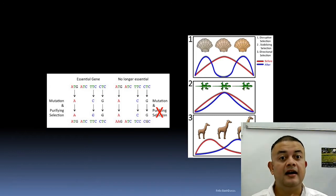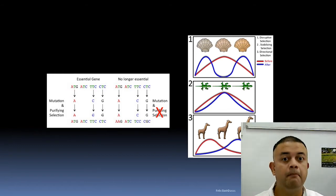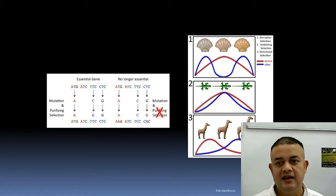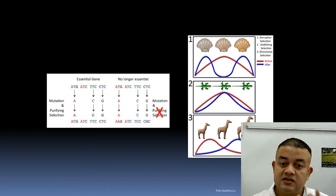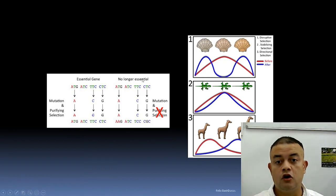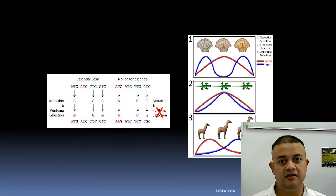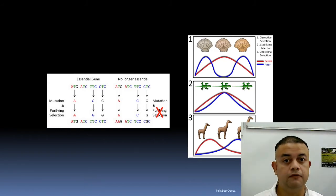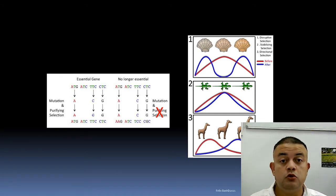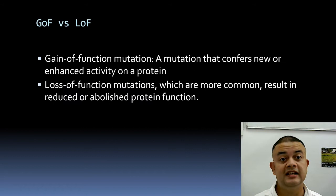If genes are essential, non-synonymous substitutions cannot be tolerated — they need to be removed by purifying selection. But sometimes mutations in essential genes confer selective advantage, as in adaptation. Certain non-synonymous substitutions in essential genes confer huge fitness to the organism — these are called gain-of-function mutations.